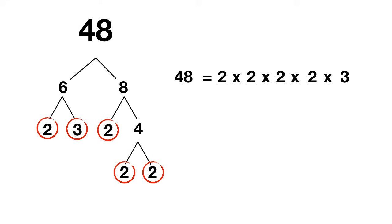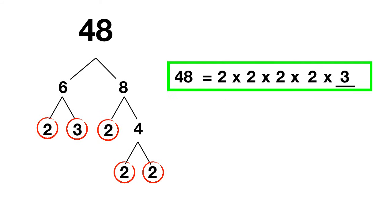Now you can check your work by multiplying all of the prime factors together. If you take 2, times 2 is 4, times 2 is 8, times 2 is 16, and 16 times 3 does give you your answer of 48. So this is the correct prime factors of 48.